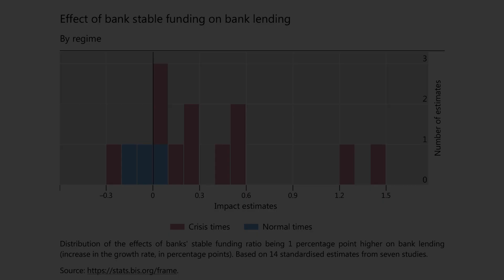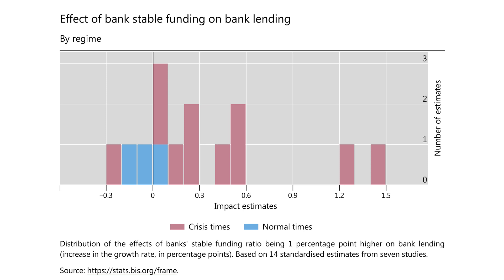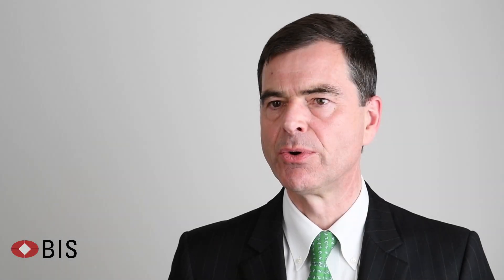The second finding is that there is a big difference between crisis and normal times. If there were to be an increase in the funding ratio, for example, then in normal times we would see lending restrained a little bit. But in crisis times, in contrast, lending will be very much supported, making on balance the liquidity ratios serve a counter-cyclical purpose.